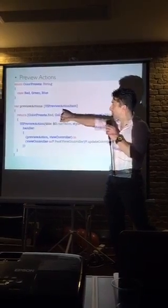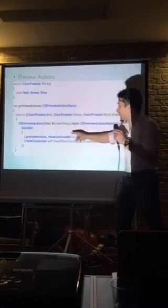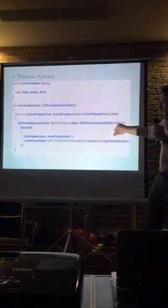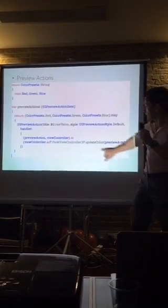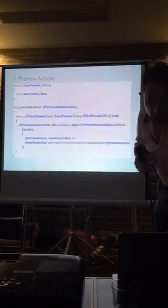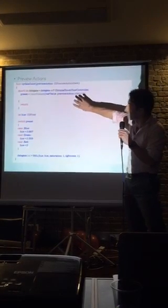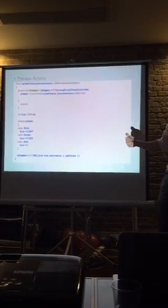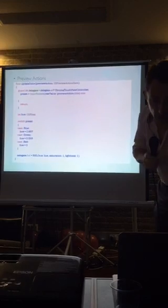In my previewActions, I want to return an array of UIPreviewActionItems. Using a map, I can get those three values, take the raw value as a title, that's the style there, and supply a handler which will be invoked when the user presses on that preview action. I'm going to invoke an updateColor method using the title — red, green, or blue. In updateColor, I create the color preset enumeration from that title, and send a hue based on red, green, or blue, and set the delegate's HSL — which is the main application — to the correct color.